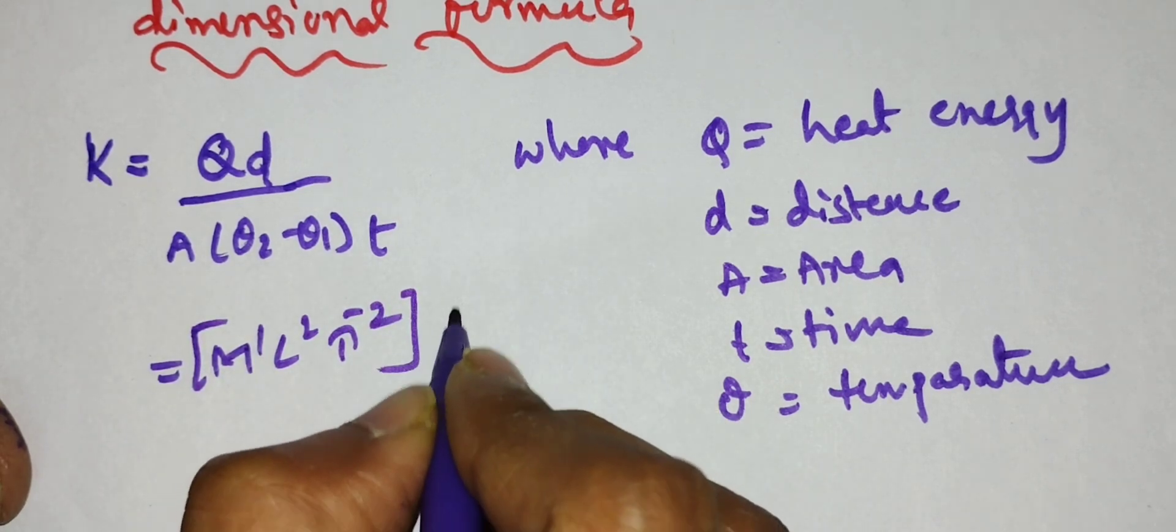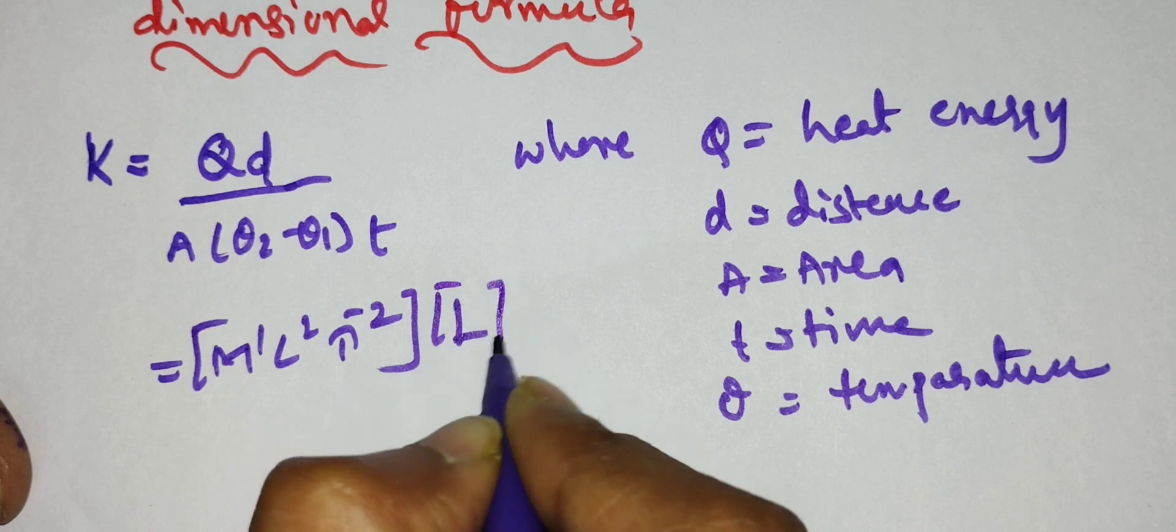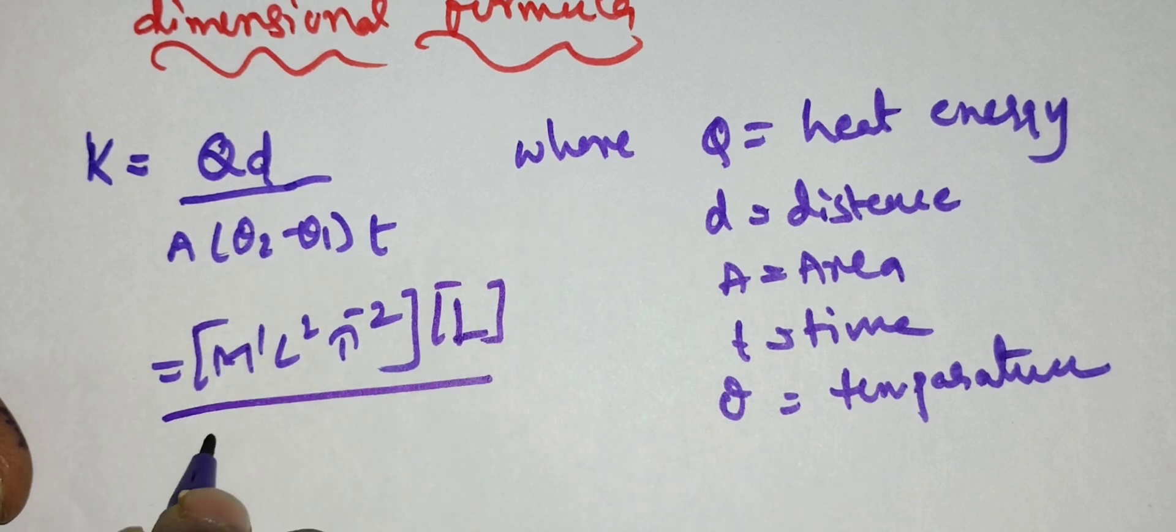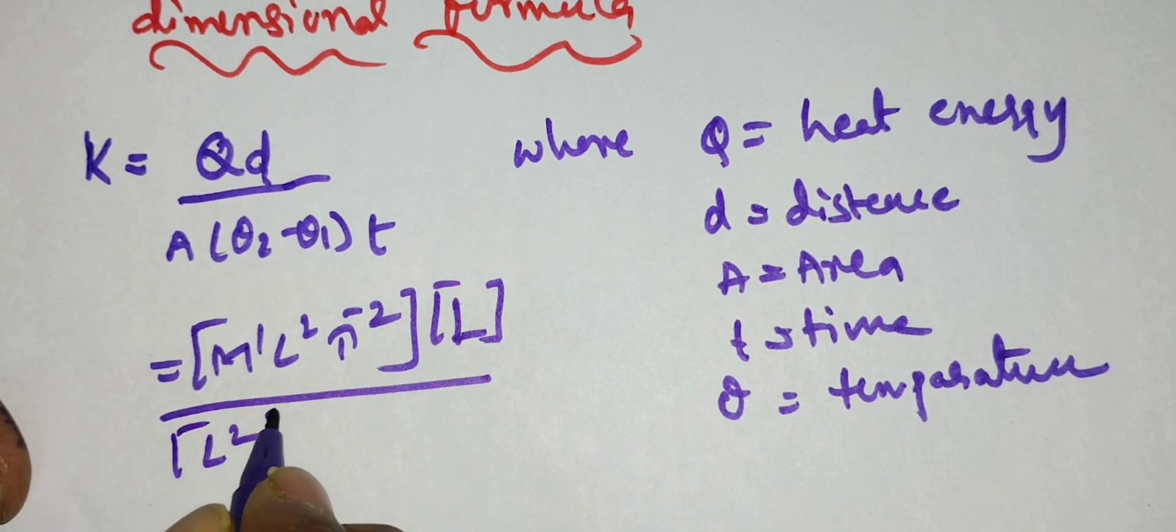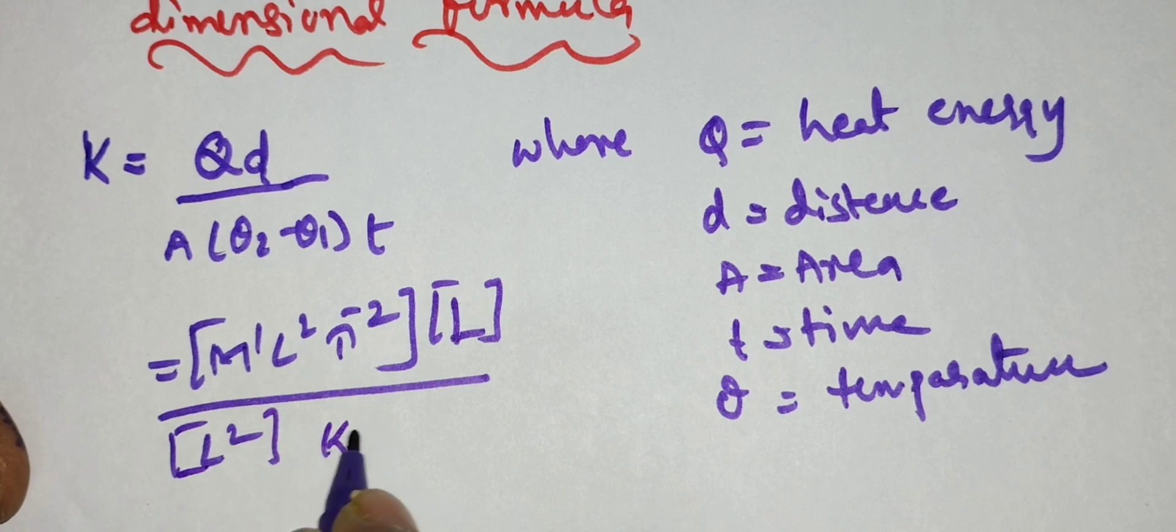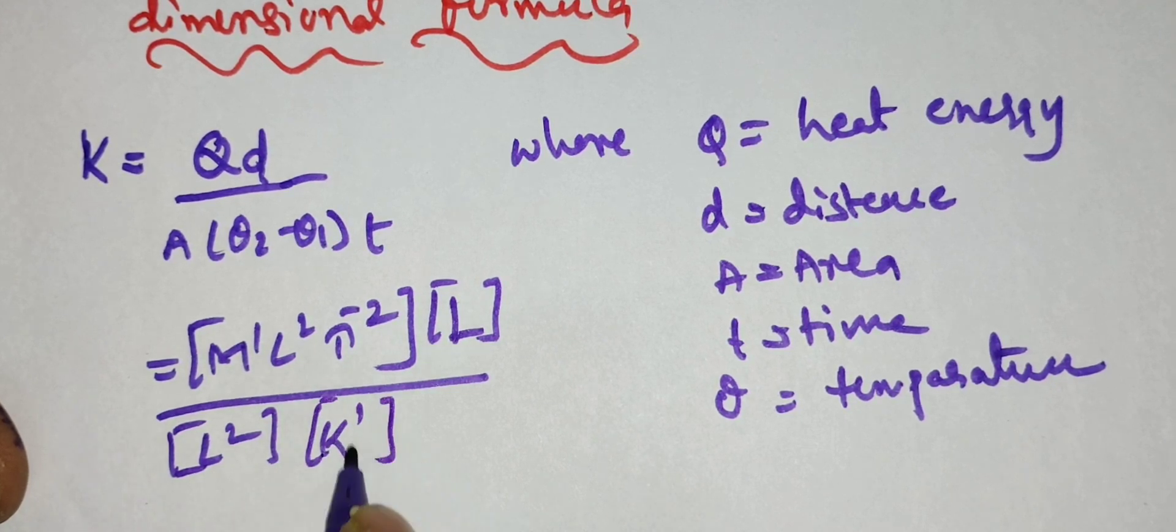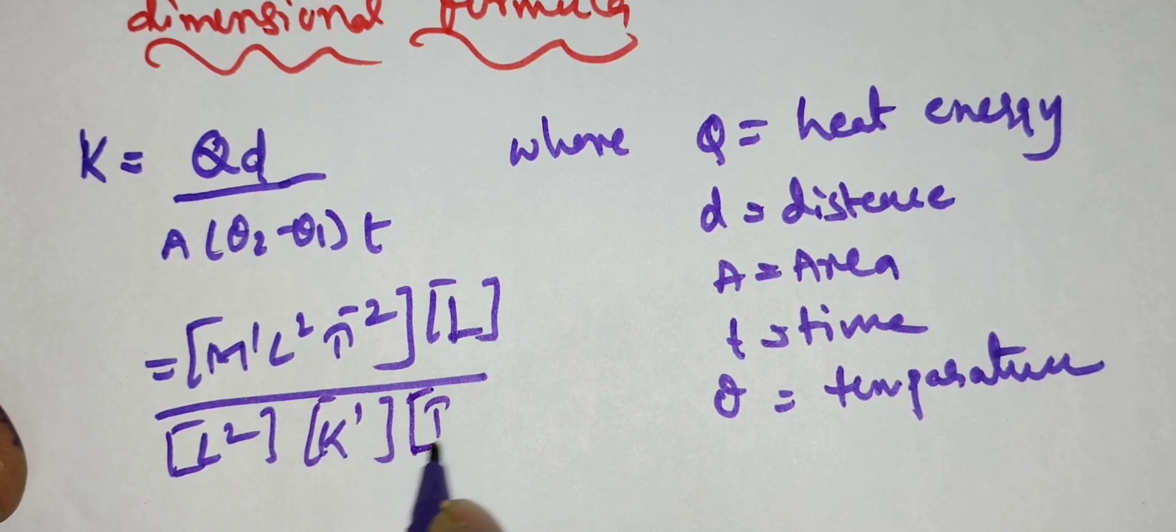D is nothing but distance, that is l power 1, and A is nothing but area, l square. Theta is nothing but temperature kelvin power 1, and T is time, that is nothing but t power 1.